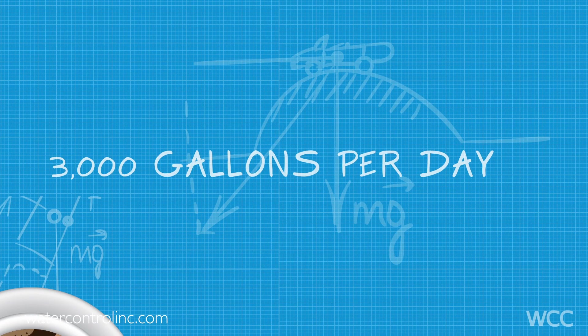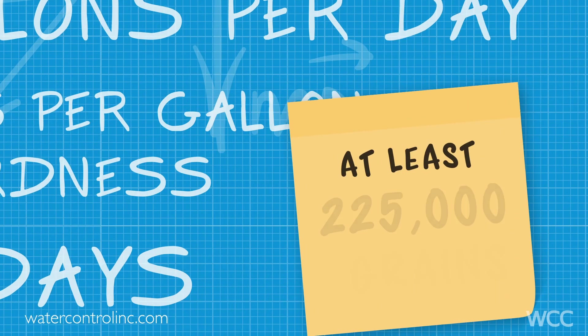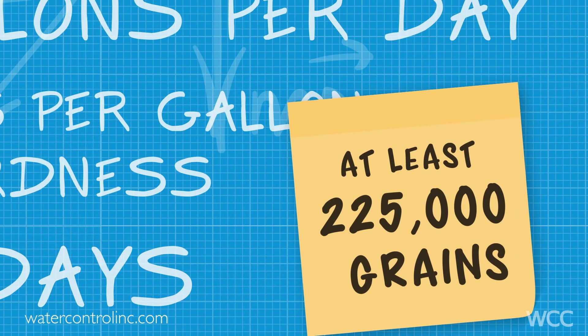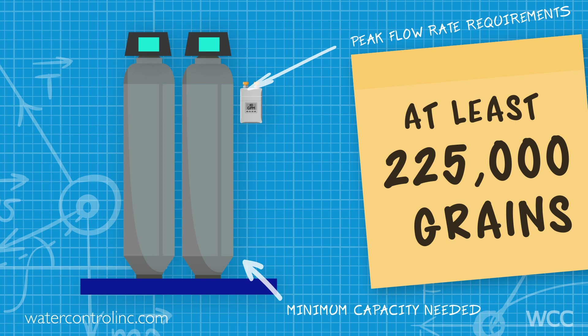For example, 3,000 gallons of soft water usage per day times 15 grains per gallon of hardness times five days would be a required capacity of at least 225,000 grains. Go back to the manufacturer's spec sheets and find a system that both meets your peak flow rate requirements and gives you the minimum capacity needed.